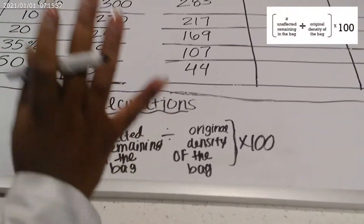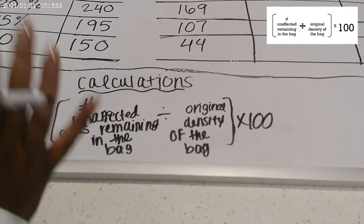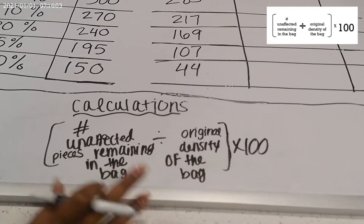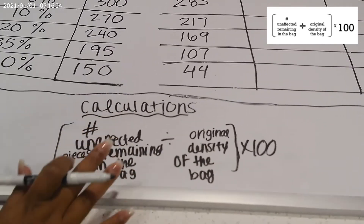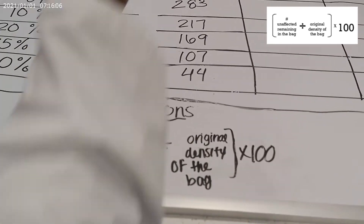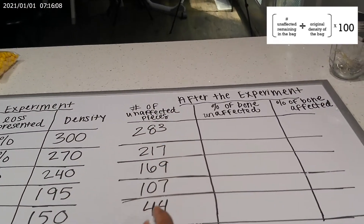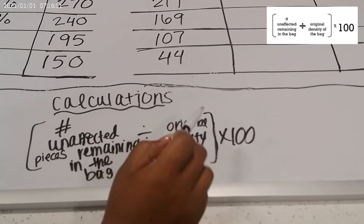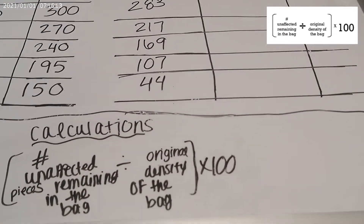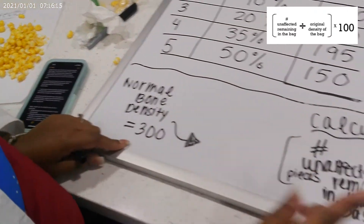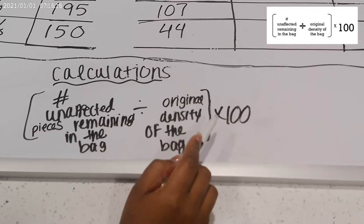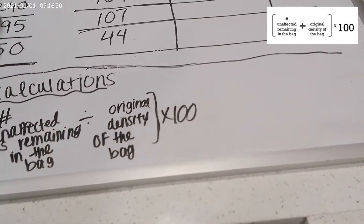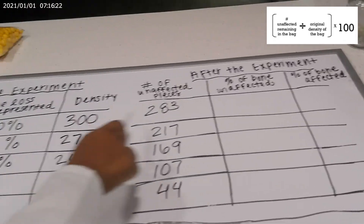Let's calculate the percentage of bone unaffected by using this formula here, which takes the number of unaffected cereal pieces remaining in the bag — shown in this column here — and divides that by the original density of the bag, which is here under normal bone density, then multiplies that by 100. Let's do an example with Bag 1.